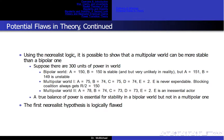Suppose there are 300 units of power in the world. In a perfectly bipolar world, A equals 150 and B equals 150 — this is stable but very unlikely in reality. But A equals 151 and B equals 149 is unstable. In a multipolar world with A equals 75, B equals 74, C equals 75, D equals 74, and E equals 2, E is never expendable because it can block any coalition. In a second multipolar world with A equals 78, B equals 74, C equals 73, D equals 73, E equals 2, E is a non-essential actor — showing that multipolar worlds can be either stable or unstable. A true balance of power is essential for stability in a bipolar world, but not necessarily in a multipolar one.